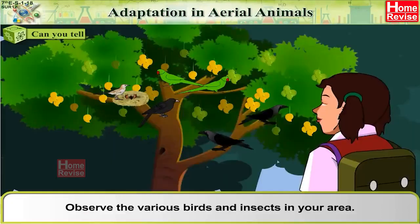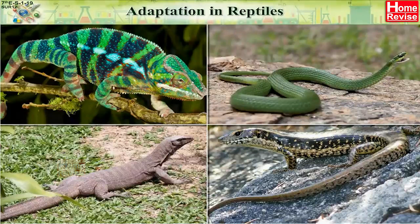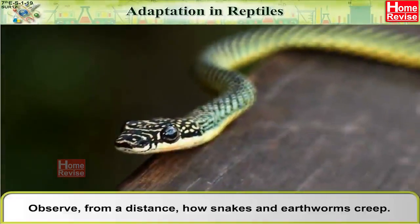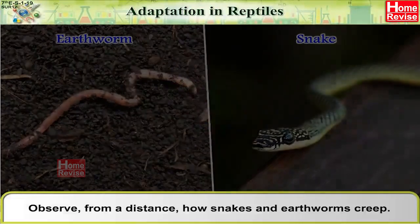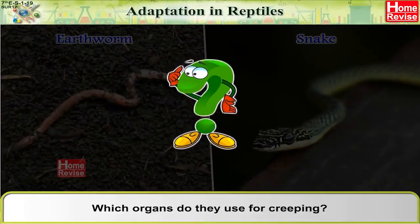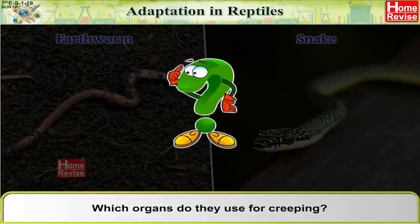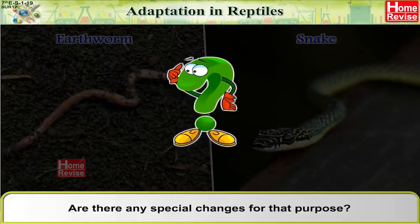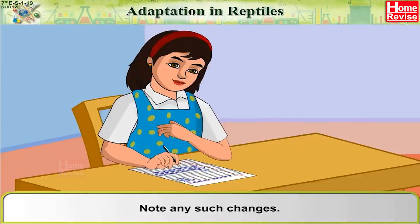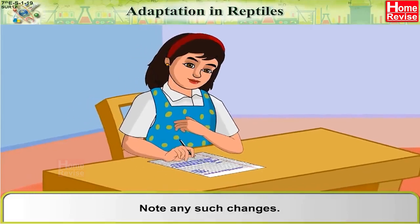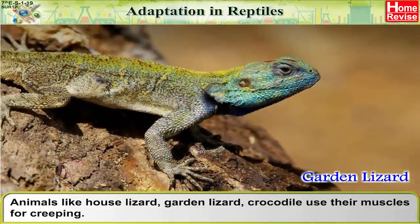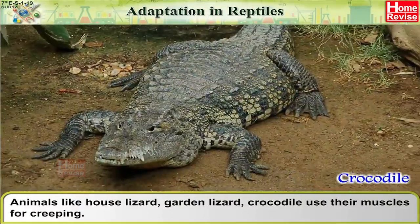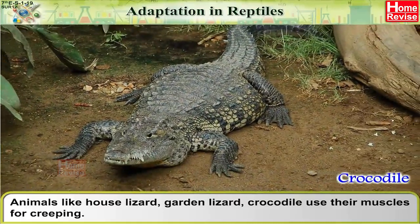Adaptation in Reptiles: Observe, from a distance, how snakes and earthworms creep. Which organs do they use for creeping? Are there any special changes for that purpose? Animals like house lizard, garden lizard, and crocodile use their muscles for creeping.